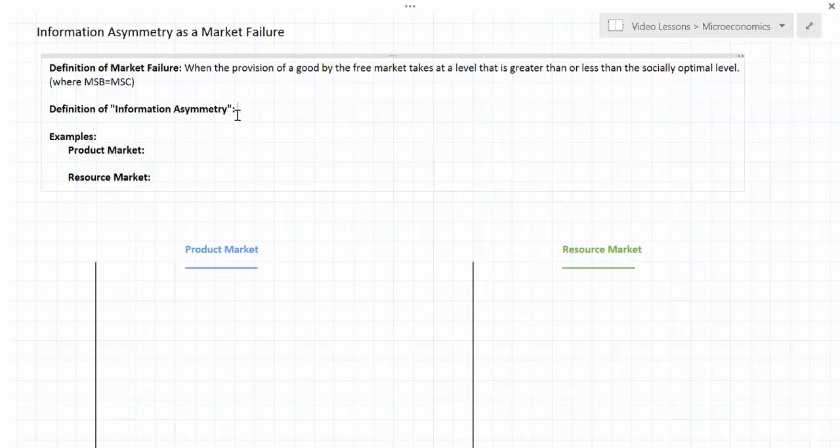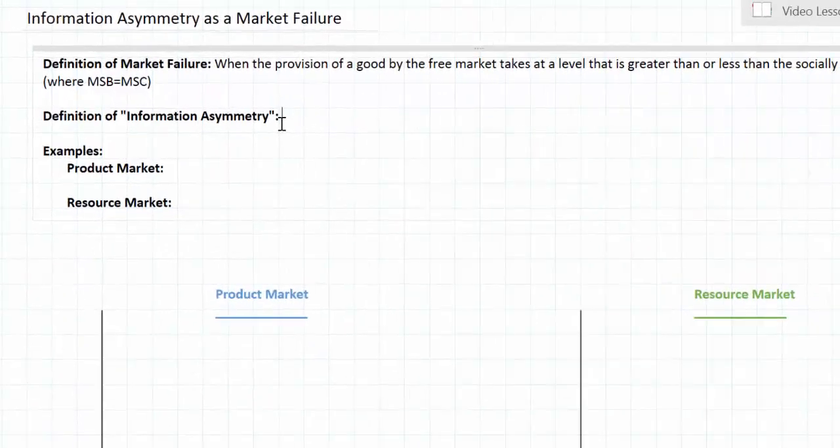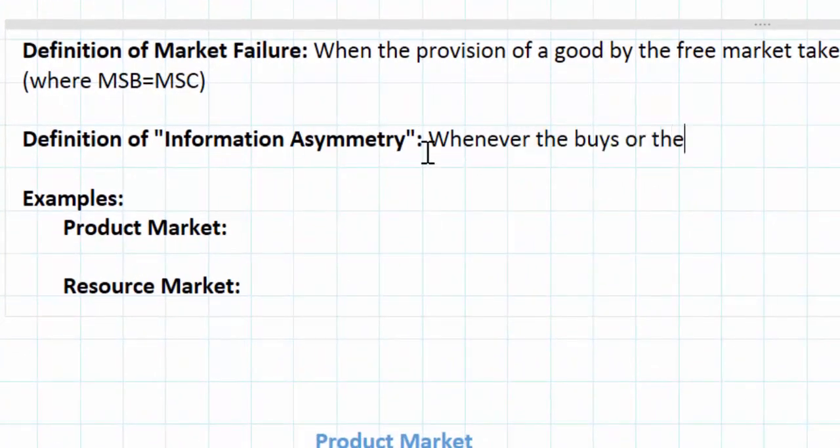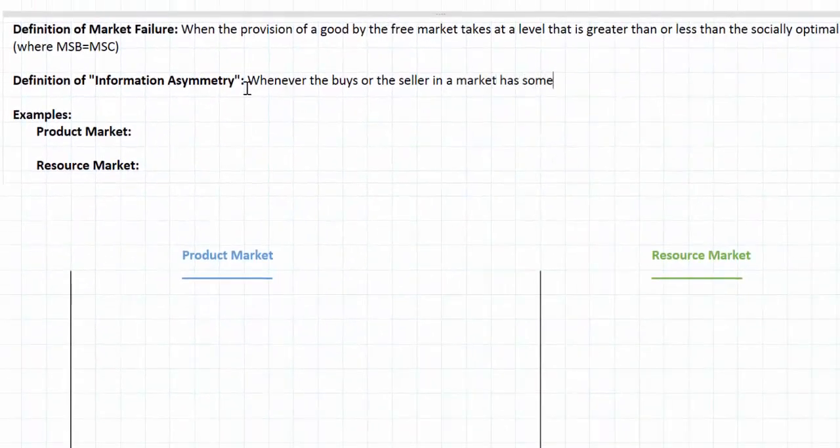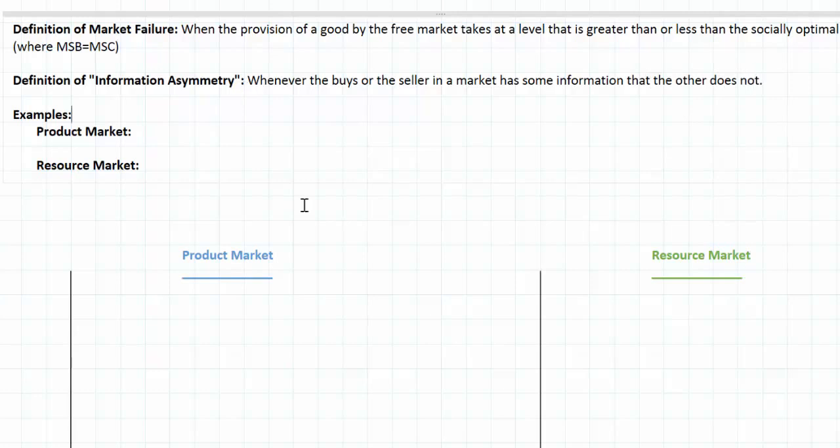Information asymmetry can be defined as a situation that exists whenever the buyer or the seller in a market has some information that the other does not. We'll talk about a couple examples in this lesson of information asymmetry and illustrate in diagrams how its existence can result in an over-allocation of resources towards a particular good.